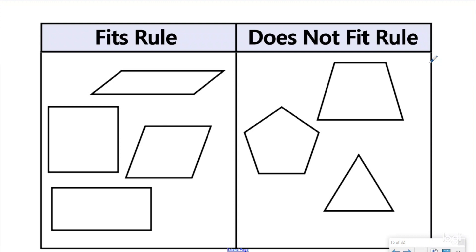I'd go back to my attribute list from last lesson and start at the top. Are these polygons and the others aren't? No — all of them are closed shapes made with straight lines, so they're all polygons. Let's move down: quadrilateral — maybe they grouped these by four sides. All of these do have four sides. But there's a trapezoid in the other group that also has four sides, so my rule can't be quadrilateral because I have quadrilaterals in both groups.